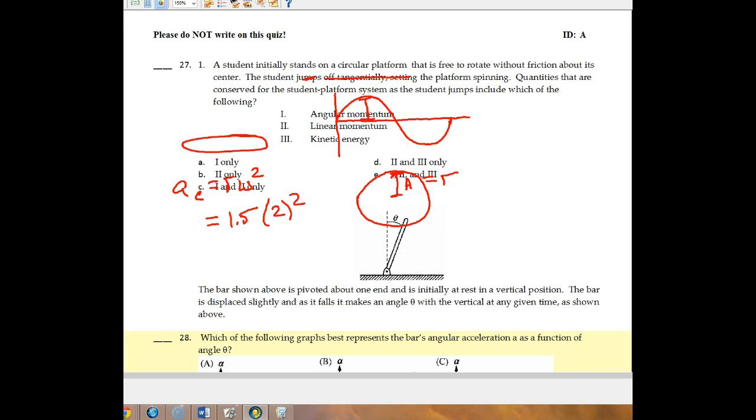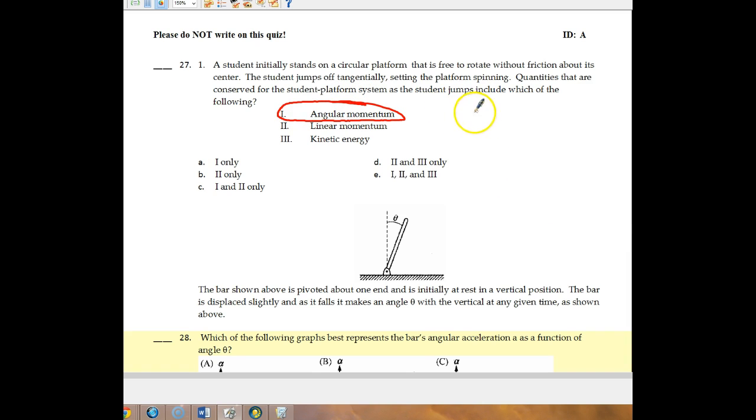For number 27, this is the next one. A student is standing on a circular platform. It's free to rotate without friction about center. The student jumps off tangentially, setting the platform spinning. Quantities that are conserved for the student platform system as a student include, which of the following? Well, it's definitely angular momentum. So when the student pushes using Newton's third law in one direction, it goes one way. The student goes one way. So here we've got our student standing on the platform, and the student jumps this way, sends the platform spinning this way. So our angular momentum is conserved. However, our linear momentum is not. So linear momentum is not conserved. And because this is a good example of an explosion, kinetic energy is not conserved either. So your answer here is letter A.